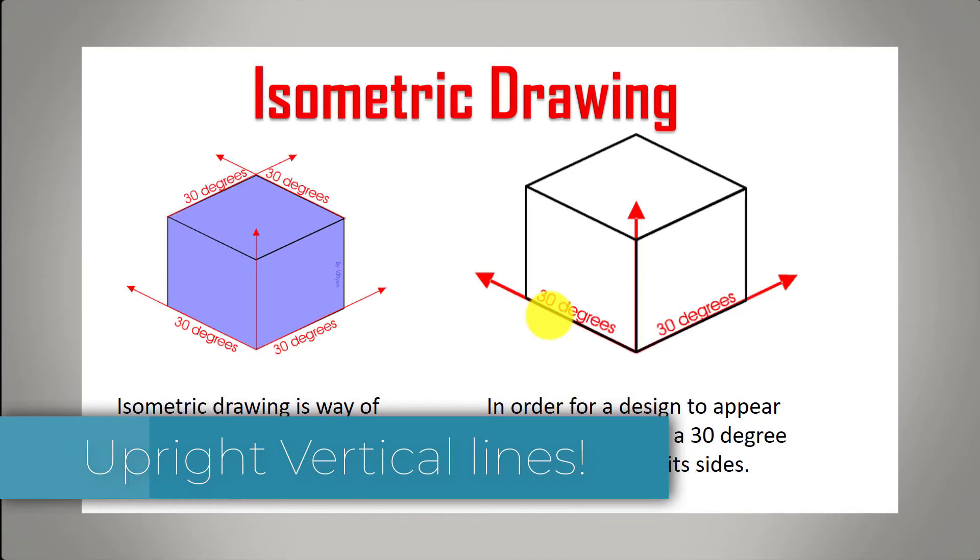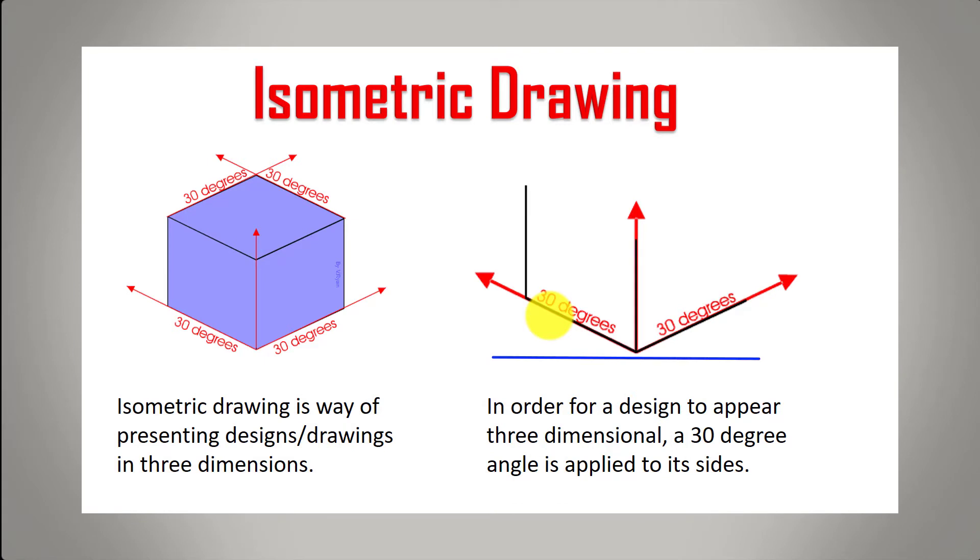That's right, it's the upright lines. All the other lines are going at 30 degrees and they're all parallel. So use the blue line as an imaginary base line and you can see that the other lines are at 30 degrees.